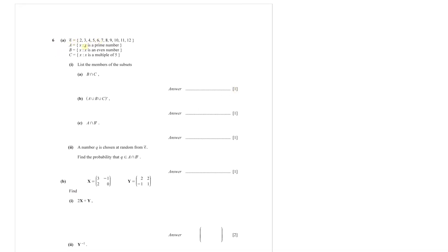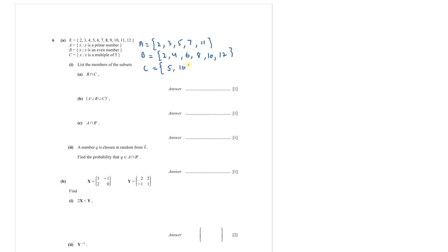Question 6: you are given a universal set. A is the set of prime numbers, B is the set of even numbers, and C is the set of multiples of 5. From the universal set: A = {2, 3, 5, 7, 11}, B = {2, 4, 6, 8, 10, 12}, C = {5, 10}.